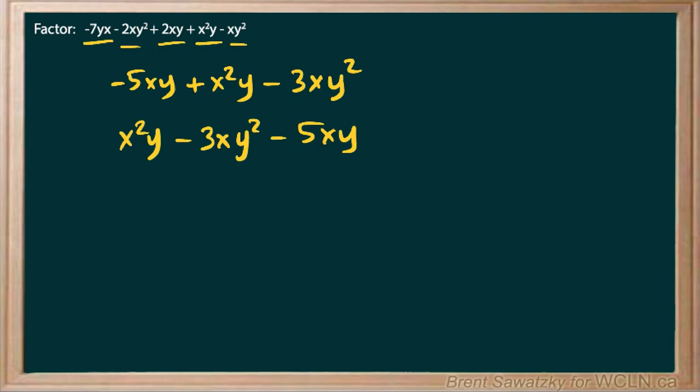So if we were to pull out the xy, we can double check. We have an x squared, an x, and an x. So the lowest power is just an x. So that's good enough.